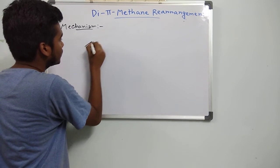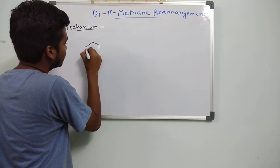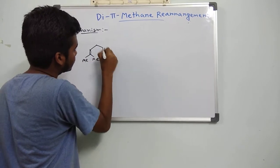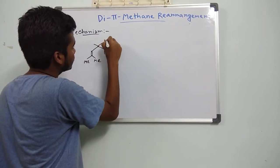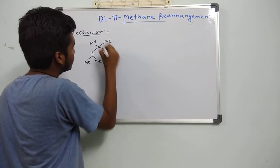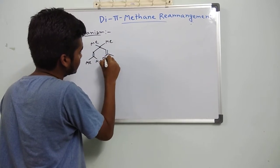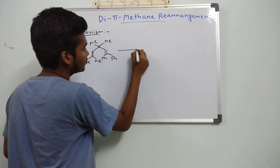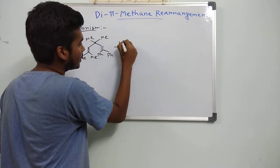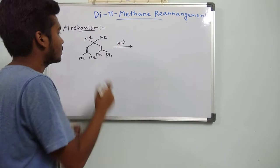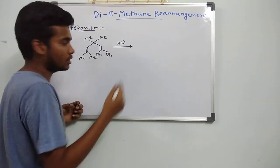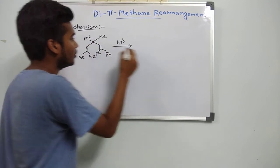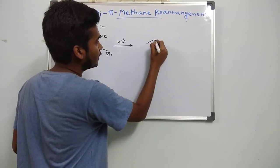Here I am taking this substrate, which is 1,4-diene. In presence of light, what will happen — these two double bonds will cleave homolytically, and what we will get.